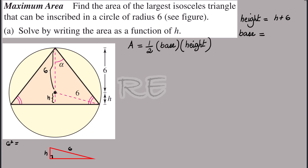Six squared is equal to h squared plus the smaller base — we're going to call it lowercase b of the smaller triangle. So 36 is equal to h squared plus b squared. Therefore, b squared will be 36 minus h squared, and b will be the positive square root of 36 minus h squared.